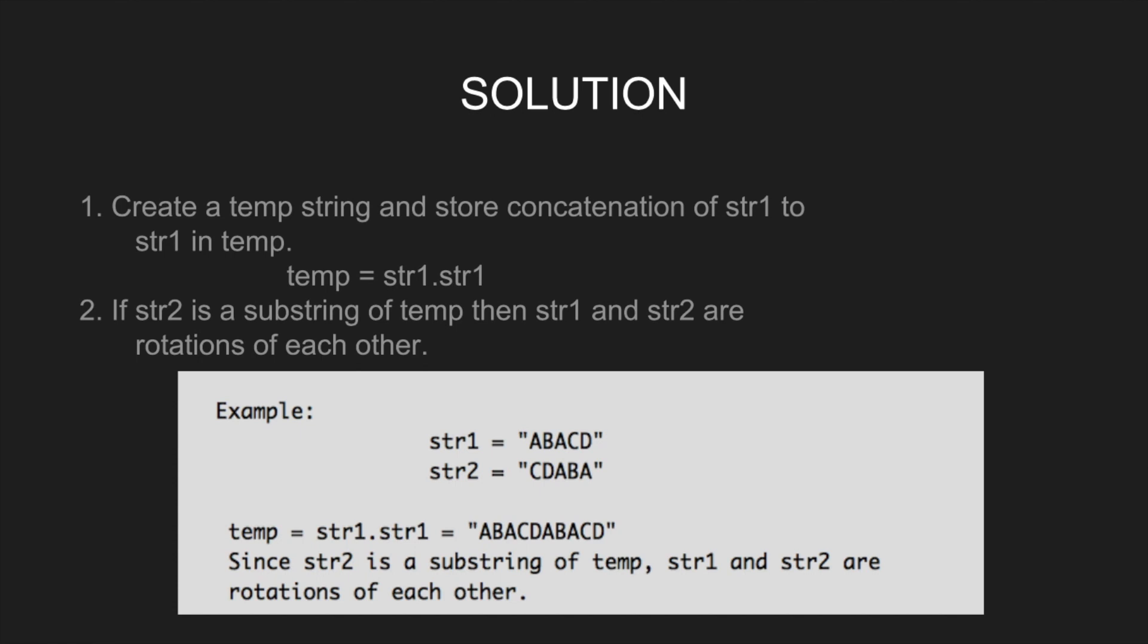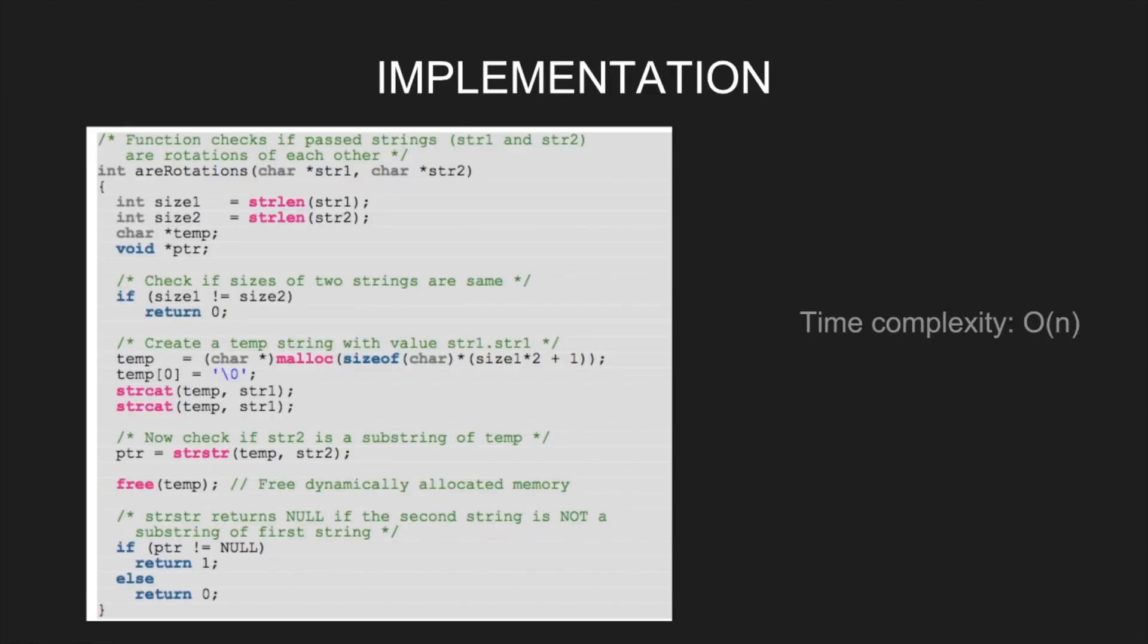Let's have a look at the implementation. Let size1 and size2 be the length of string1 and string2 respectively. If the sizes of two strings are not same, return 0. Create a temporary string with value string1 dot string1. Define temp0 as null. Then do string concatenation strcat temp comma string1 twice.